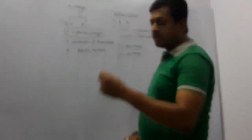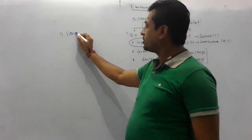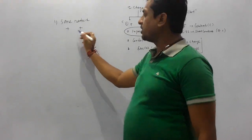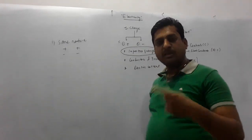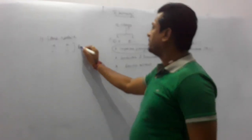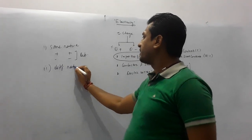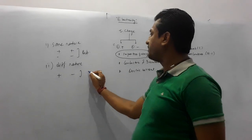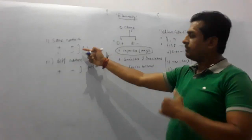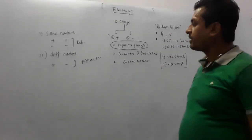Now moving to the properties of charges. There are several properties associated with charges. Property one: same nature charges — if two charges are both positive or both negative, they will repel each other. Property two: different nature charges — if one charge is positive and the other is negative, there will be an attractive force between them.